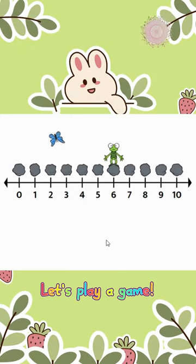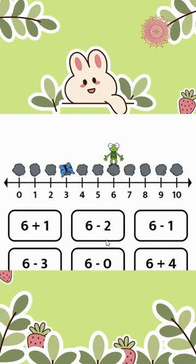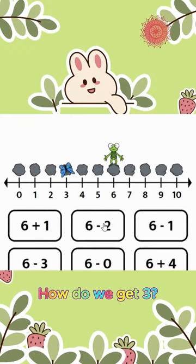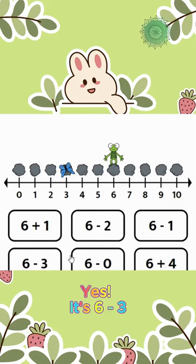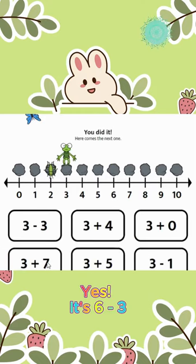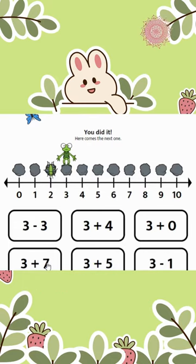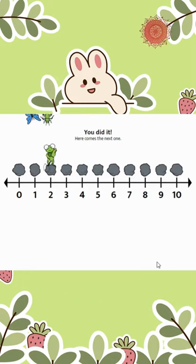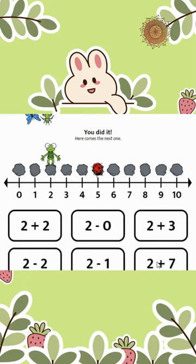Let's play a game. How do we get 3? Yes, it's 6 minus 3. What about 2? It's 3 minus 1. 3 plus 2 equals 5.